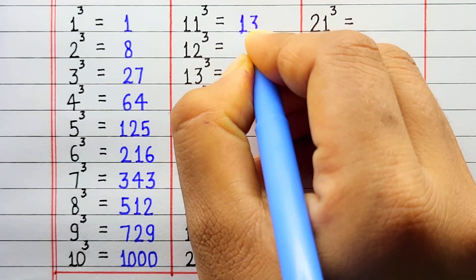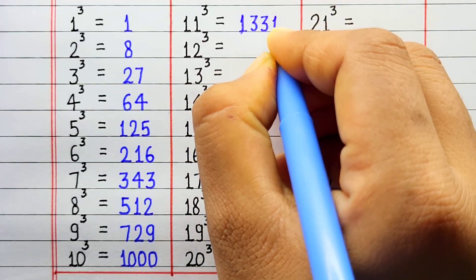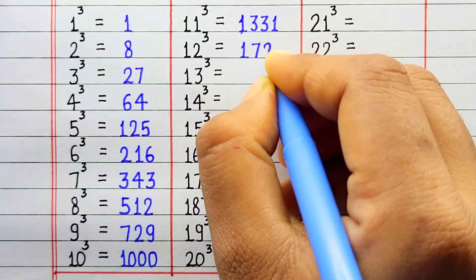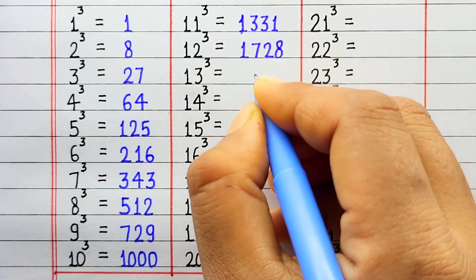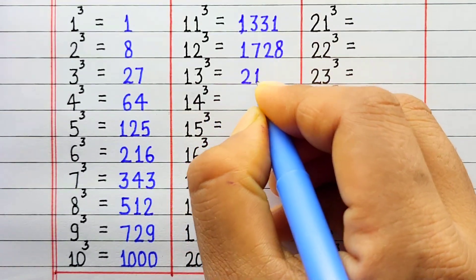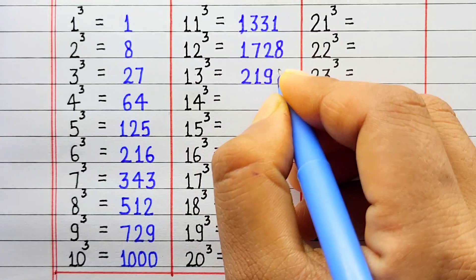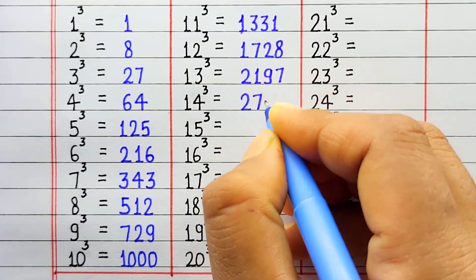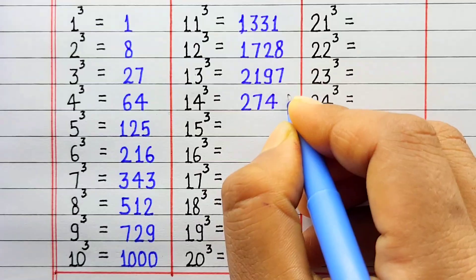Cube of 11 is 1331. Cube of 12 is 1728. Cube of 13 is 2197. Cube of 14 is 2744.